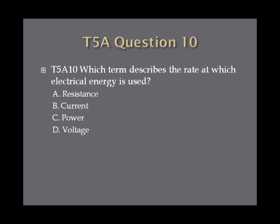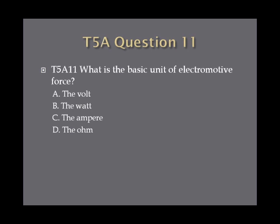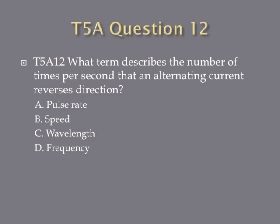Question 10: Which term describes the rate at which electrical energy is used? A, resistance; B, current; C, power; or D, voltage. Question 11: What is the basic unit of electromotive force? A, the volt; B, the watt; C, the ampere; or D, the ohm. Question 12: What term describes the number of times per second that an alternating current reverses direction? A, pulse rate; B, speed; C, wavelength; or D, frequency.